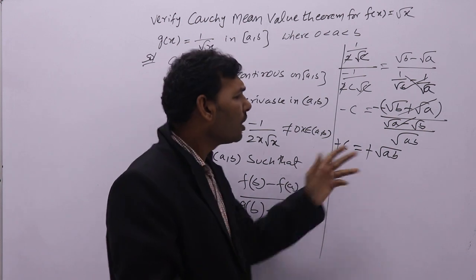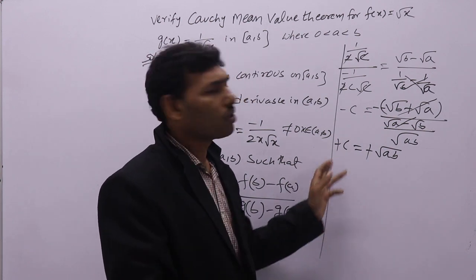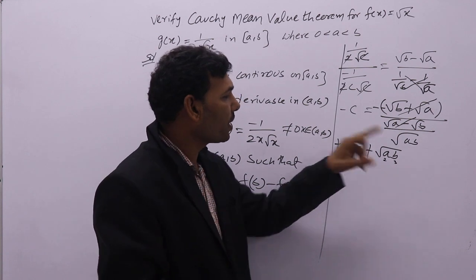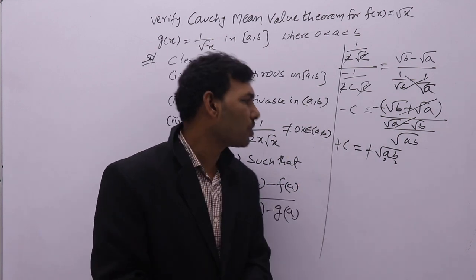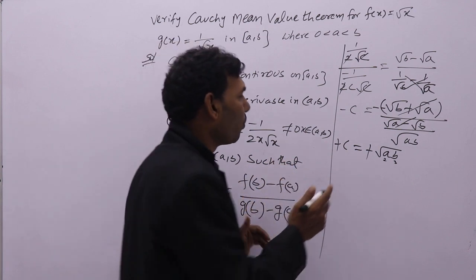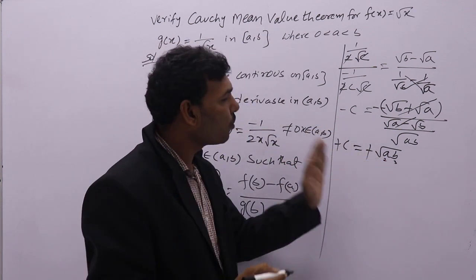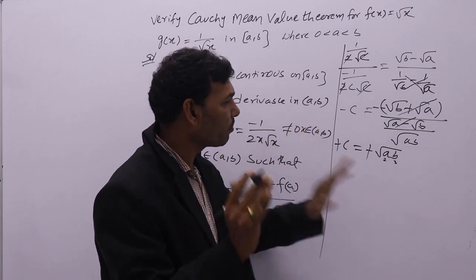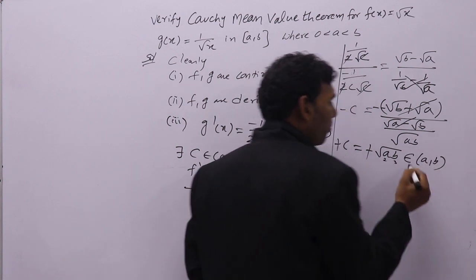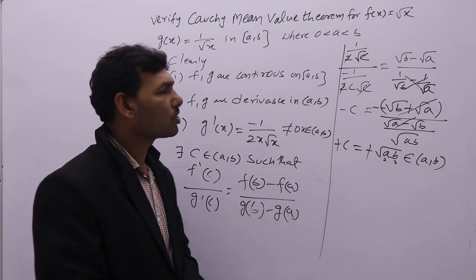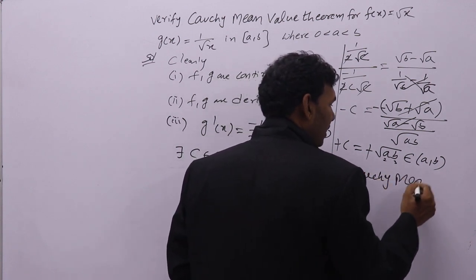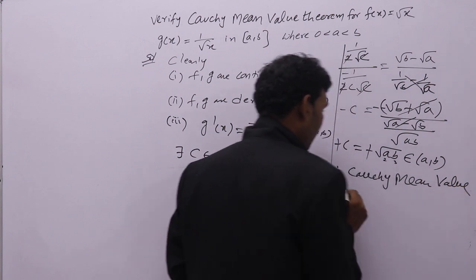To verify, take a equals 2 and b equals 3. Then c equals root(2×3) equals root 6. Since root 4 is 2 and root 9 is 3, root 6 lies between root 4 and root 9, meaning root 6 lies between 2 and 3. This confirms that root(ab) always lies between a and b. Therefore, Cauchy mean value theorem is verified.